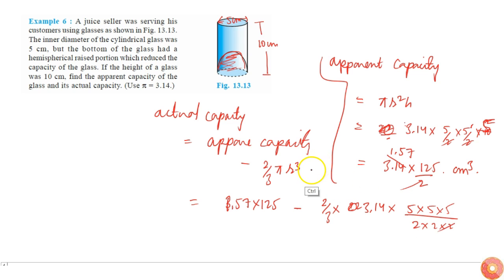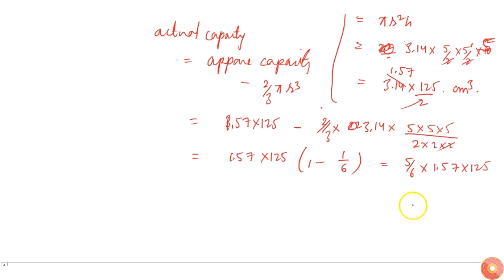The 2 will cancel. This will become 125 times 1.57. I can take common: this will become 1 minus 1/6, that will be 5/6 times 1.57 times 125. If you calculate this, you'll get equal to something around 163.54 cubic centimeters.